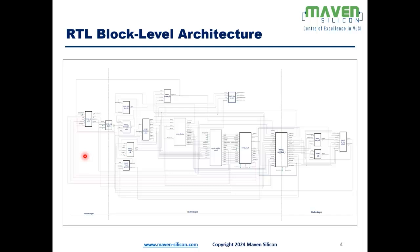In pipeline Stage 1, we have the program counter, which represents the fetch unit that fetches the instruction from the instruction memory. Stage 2 represents the decode stage, which decodes the instruction into different fields. This is also the stage where we have the branch and the store unit.